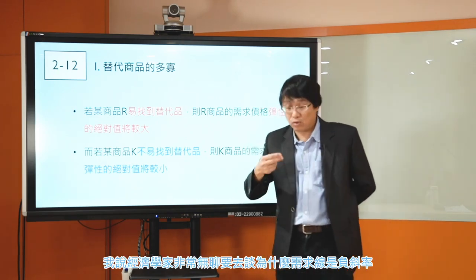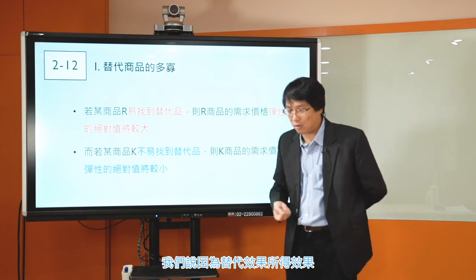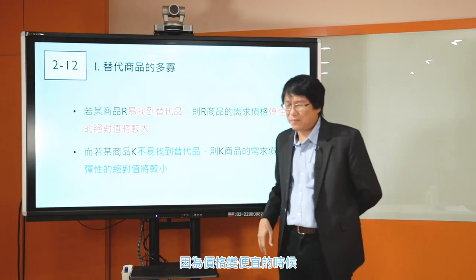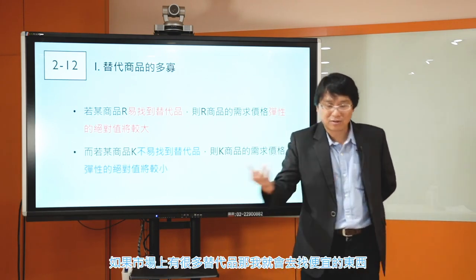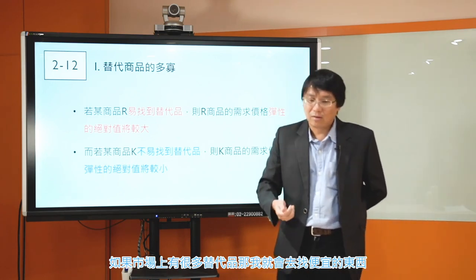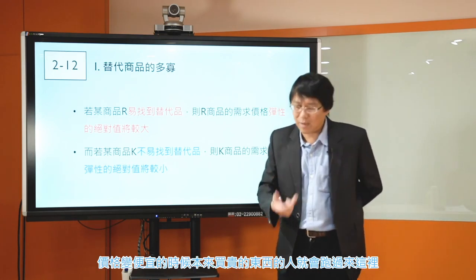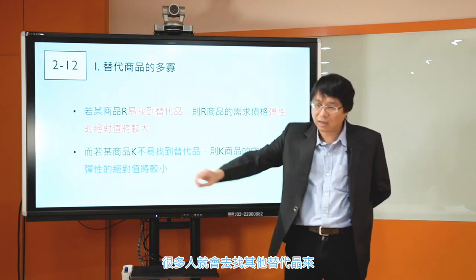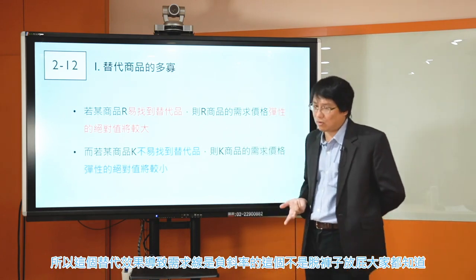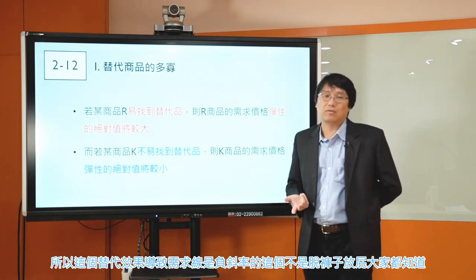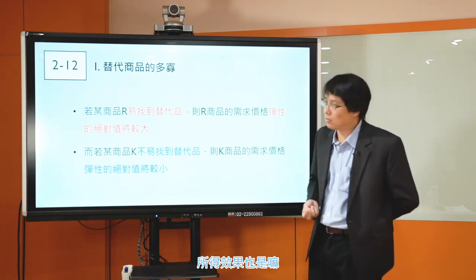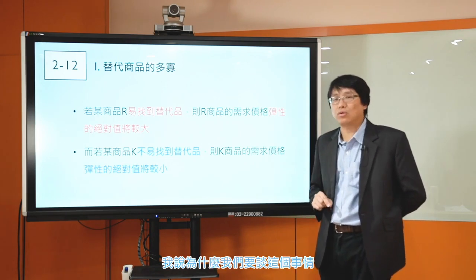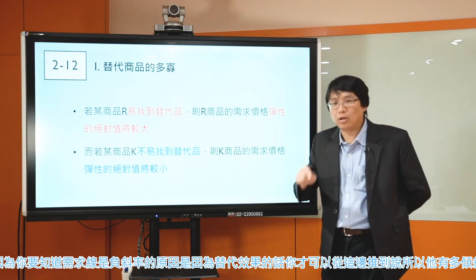第一個準則：替代商品的多寡。如果某商品R容易找到替代品，則R商品的需求價格彈性的絕對值會比較大；若某商品K不易找到替代品，則K商品的需求價格彈性的絕對值會比較小。這和我們之前講的需求線為什麼是負斜率有關，那是因為替代效果。如果市場上有很多替代品，價格變便宜的時候本來買貴的東西的人就跑過來；如果價格漲價的話，很多人就會去找其他替代品。